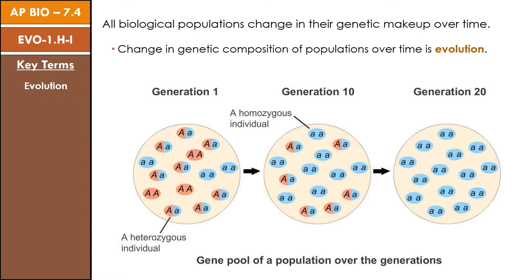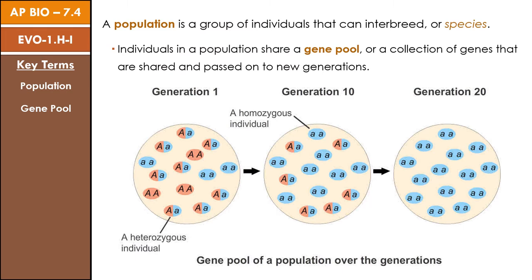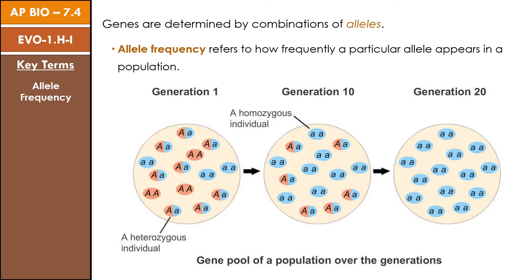Populations gradually evolve over a series of subsequent generations as natural selection and other mechanisms act upon their allele frequency. We define a population as a group of individuals that can interbreed and produce viable offspring, which are known as species. When looking at a population, we see that they share a common gene pool, or collection of genes that can be shared and passed on to new generations. Each of these genes are determined by a combination of alleles, and the allele frequency of a gene pool refers to how frequently a particular allele appears in the population.